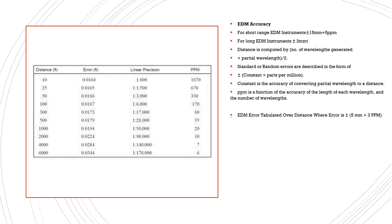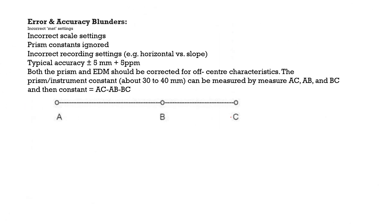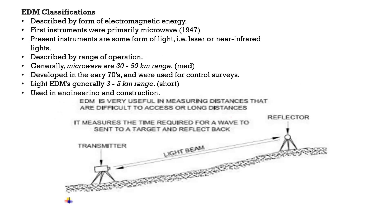EDM accuracy: short range accuracy is plus or minus 15 mm to 5 ppm; long range is plus or minus 3 mm. Distance equals number of wavelengths generated plus partial wavelength divided by 2. Standard or random error can be calculated as plus or minus constant plus parts per million. Typical accuracy is plus or minus 5 mm or plus 5 ppm. EDM classification by range: microwave range of 30 to 500 km; light range is 3 to 5 km.